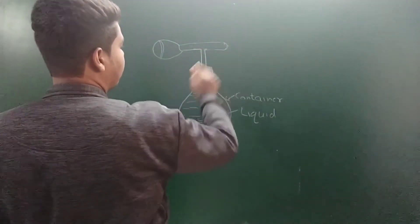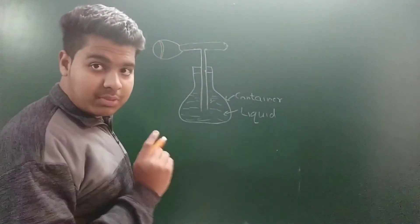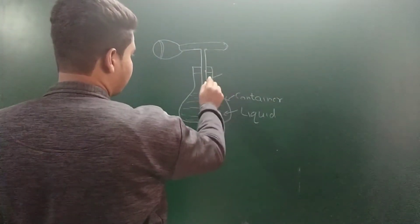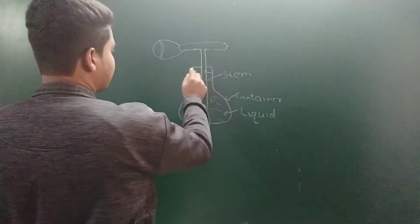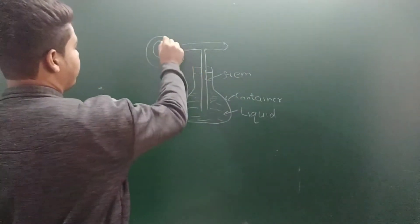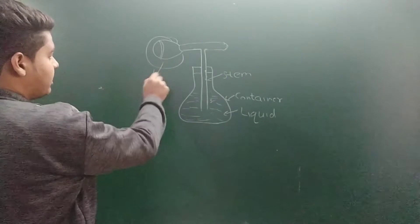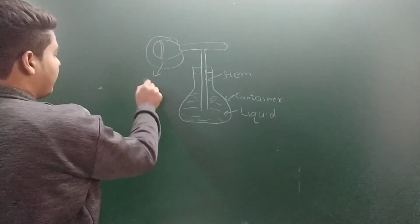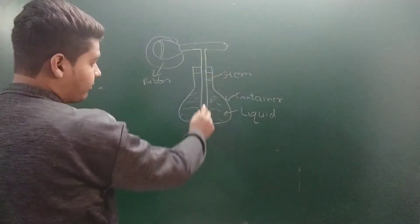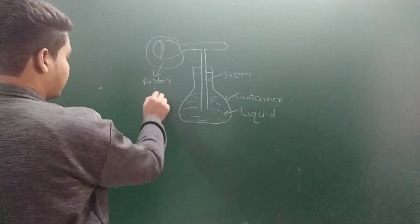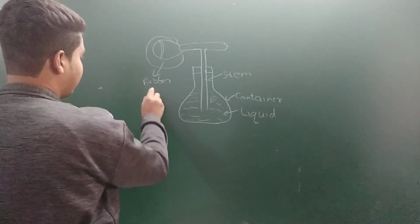And this is the core. This is an important part - this part is known as a rubber balloon. It is the main part so that this stem, this whole system works. I'm writing it down - rubber balloon. Now I have marked all these three regions.